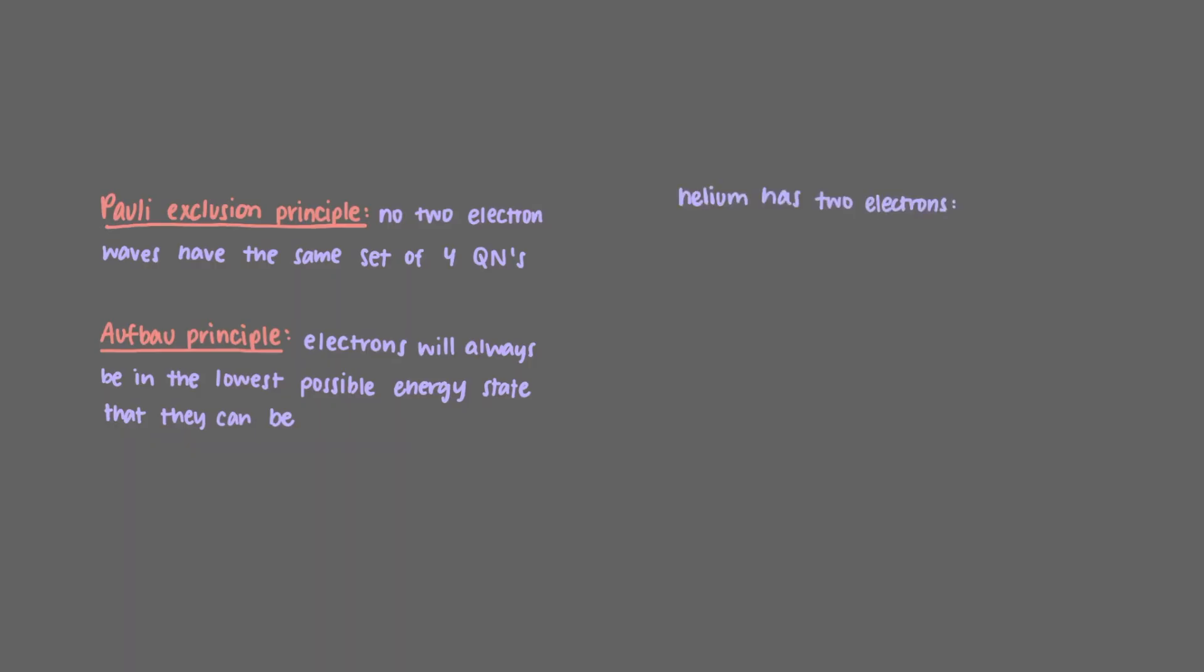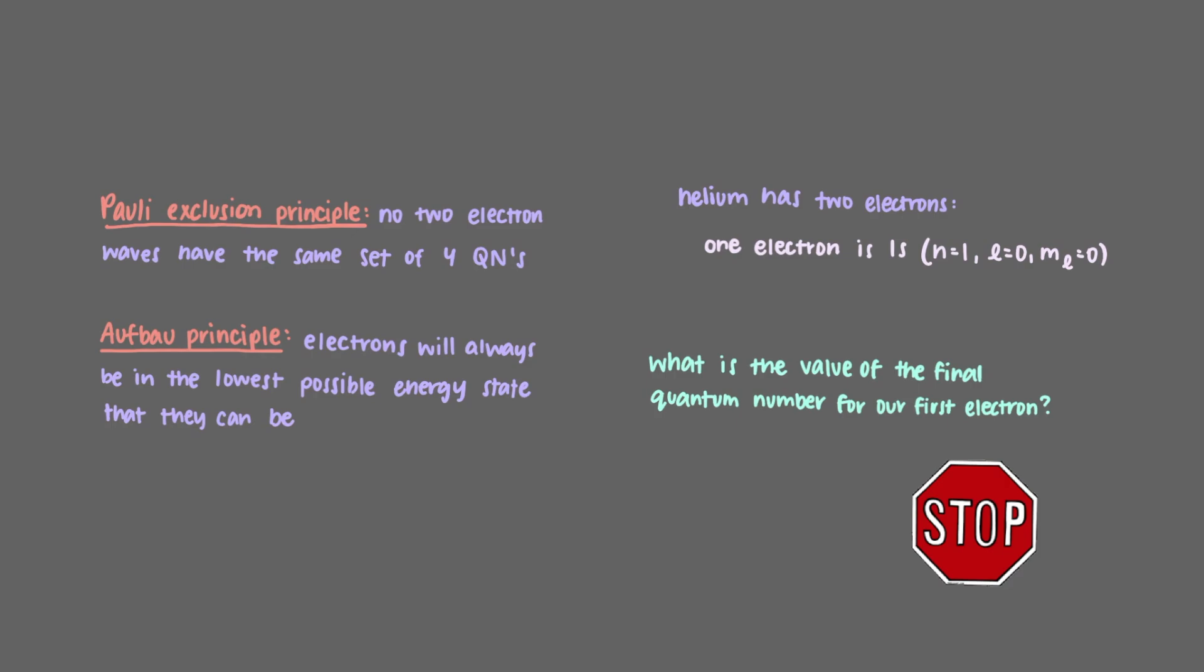So let's take helium, which has two electrons for example. One of the electrons is 1s, n equals 1, l equals 0, and m sub l equals 0, but we're still missing one quantum number. Which is the value of the final quantum number for our first electron?